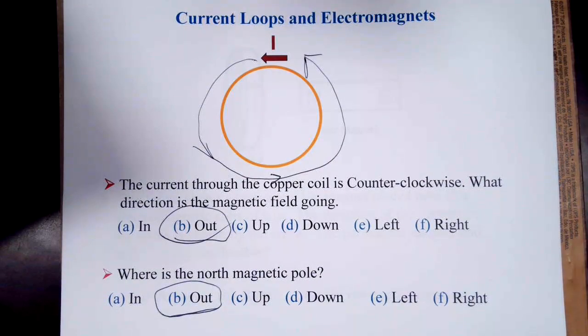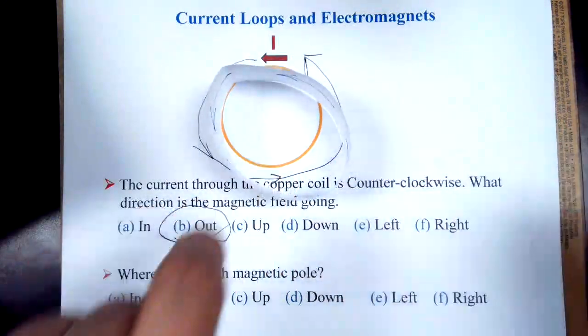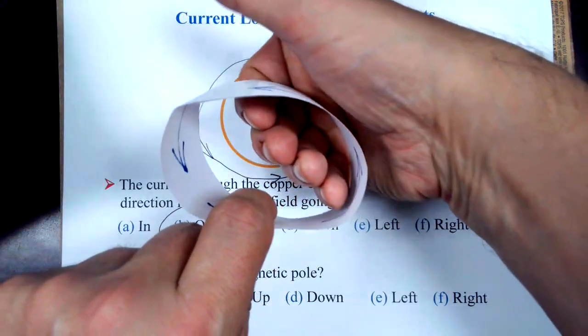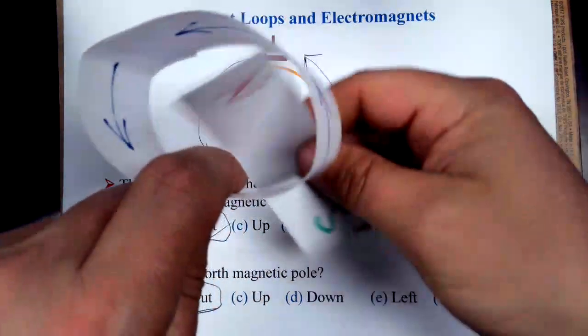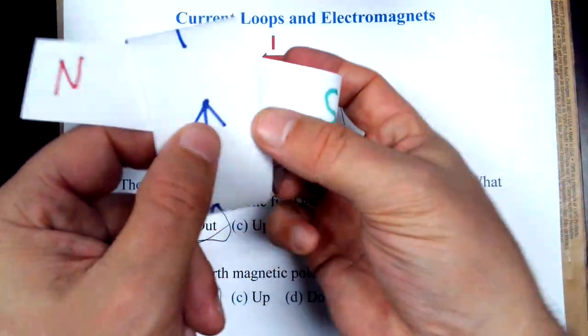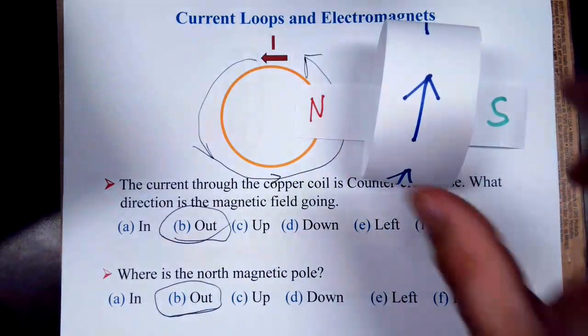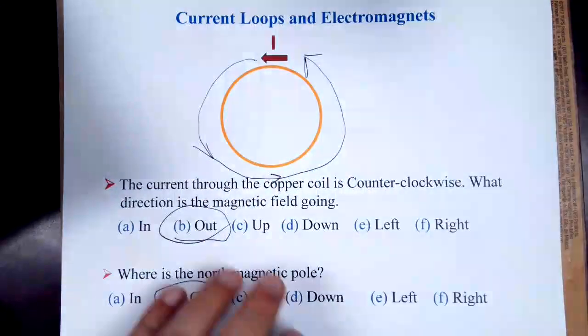I think I used this thing before. This is the same idea. I have my current here going counterclockwise. If I do the thumb, that means the field's coming out of the page, and so the north pole is pointing out of the page here. Once you've set this up, this can point any which way, but it's always going to be the same.